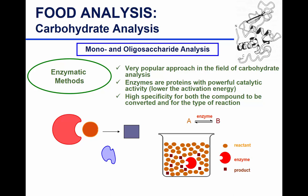Enzymes are proteins with catalytic activity — they lower the activation energy and are highly specific. They convert reactants to products. When using enzymatic methods, you often generate a product that absorbs light, or you use a reactant that absorbs light and the reaction reduces that absorption. So either absorption increases or decreases depending on whether the reactant or product is what's absorbing light.